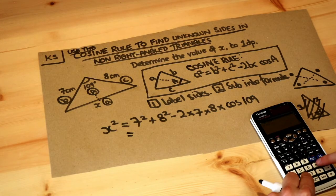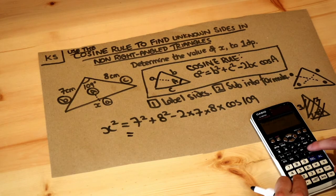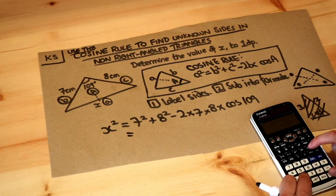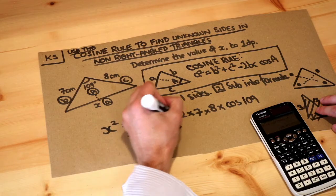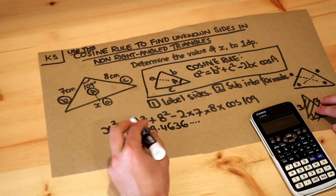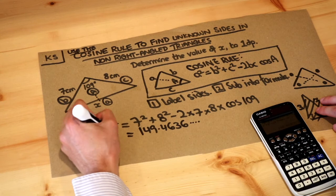So 7 squared plus 8 squared minus 2 times 7 times 8 times cos 109, making sure your calculator is in degrees mode, and that gives me 149.4636. Don't round too early yet because we're still going to manipulate this value, we're not done yet.